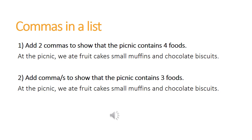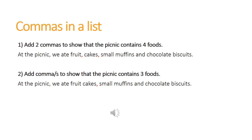If you are writing a list, commas are essential in order to be clear about the items in your list. Without commas in the right place, it can be difficult to tell the different items apart. Have a look at the sentences on your screen. They both say 'at the picnic we ate' and then a list of food items. The commas that you use here are essential to know how many and which food items there were. Pause the video and add two commas to the first sentence so that there are four different types of food in the list, and in the second sentence add a comma or commas to show the picnic contains three foods.